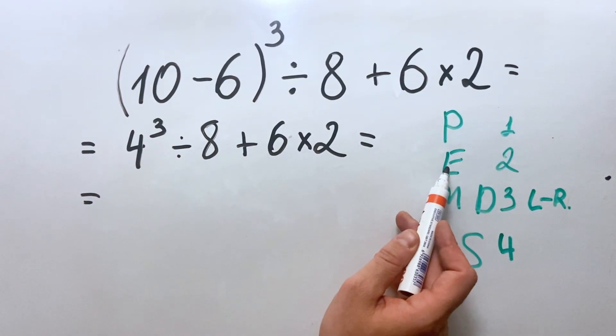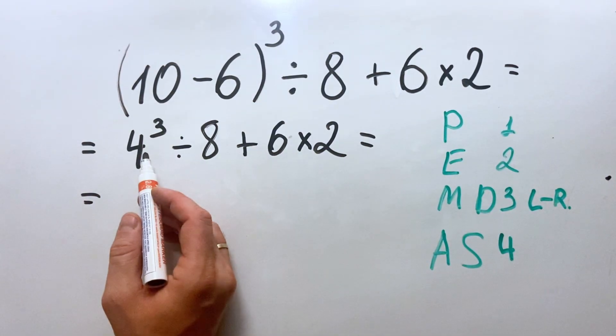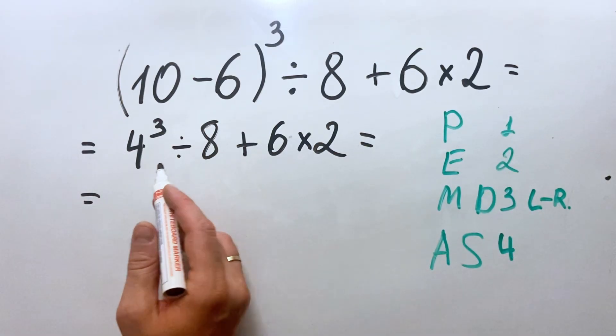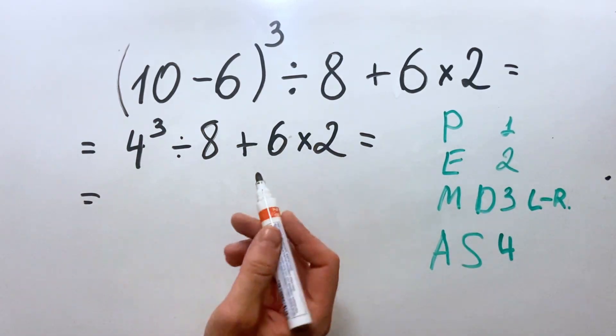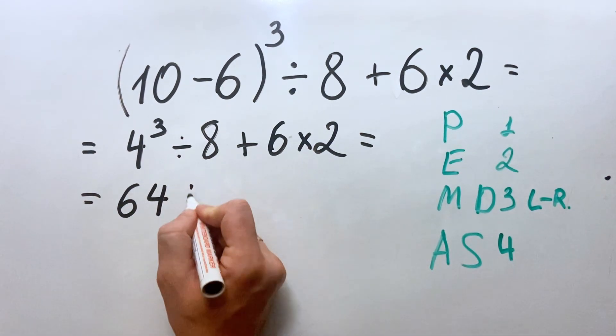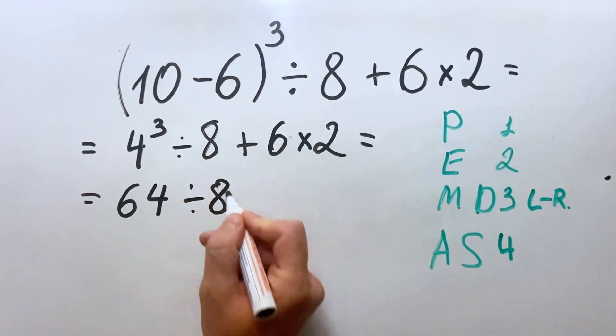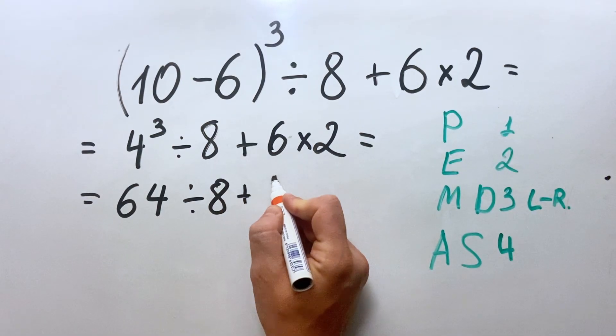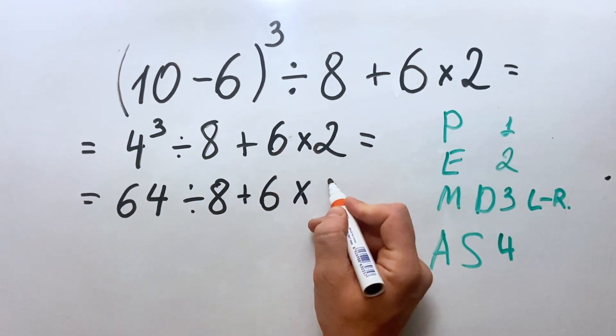We will do the second place, exponents. So we have 4 cubed is 4 multiplied by 4 multiplied by 4, which is 64. So we have 64 divided by 8 plus 6 multiplied by 2.